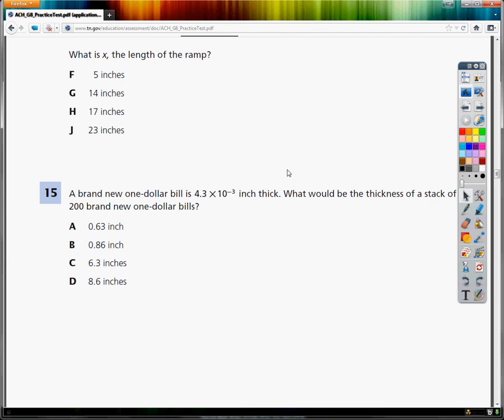So I know from the question that this is the thickness. Now I know I want 200 of them. So if you have a ton of time and are possibly a little bit insane, questionable sanity anyway, you can go ahead and add 4.3 times 10 to the negative 3, 200 times.